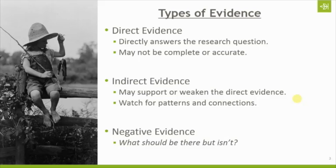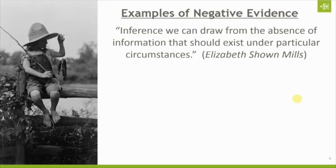We have to see what's missing, which means sometimes we have to be familiar enough with the records to know what is missing. We need to have looked at enough of them — not just the specific records for our family. Sometimes it means we have to look at all of the marriage records in a particular county for a ten-year time span, or review all of the property records for a particular location, or understand the law about land ownership in a specific state at a specific time.